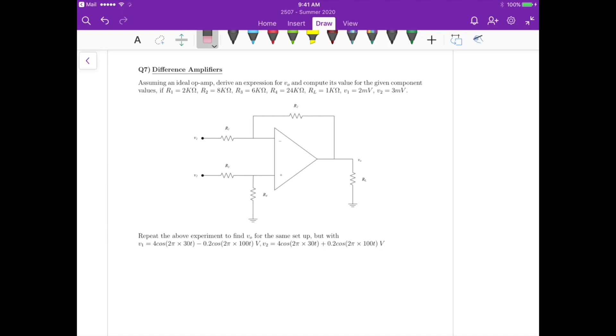Hi again, so this is question 7 and basically a difference amplifier. So assuming an ideal op amp, derive an expression for Vout and compute its value for the given component values. So first we need to find the expression for Vout here, and then we have to substitute some values of resistance.